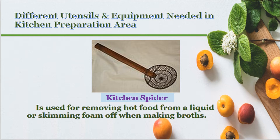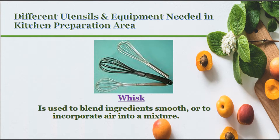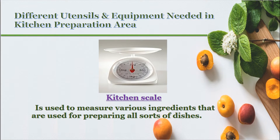Spider: used for removing hot food from a liquid or skimming foam off when making broths. Whisk: used to blend ingredients smooth or to incorporate air into a mixture. Kitchen scale: used to measure various ingredients that are used for preparing all sorts of dishes.